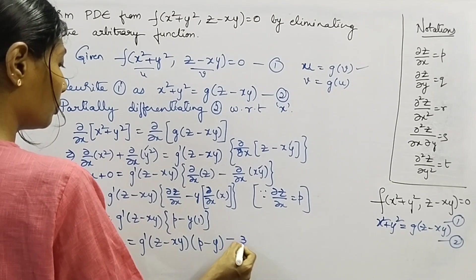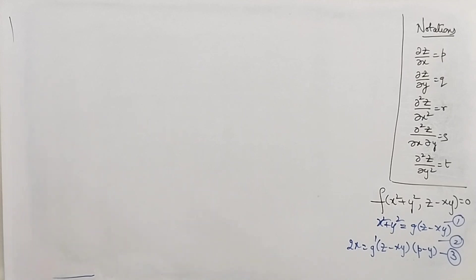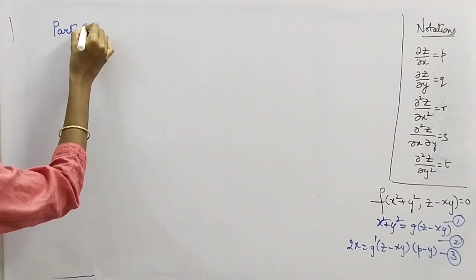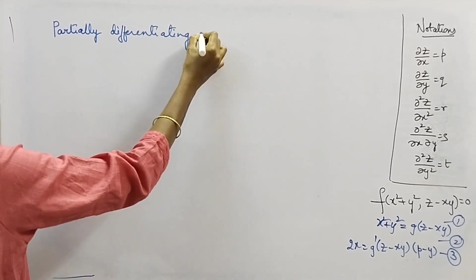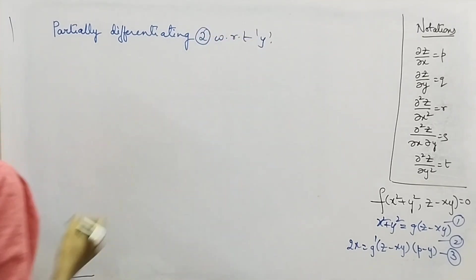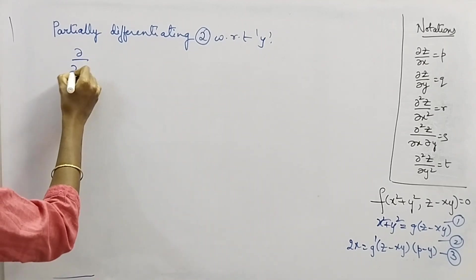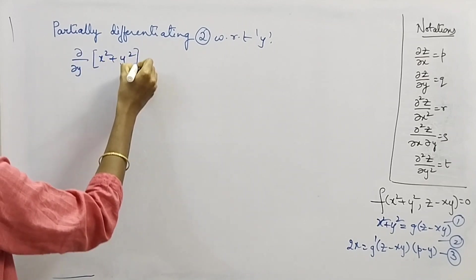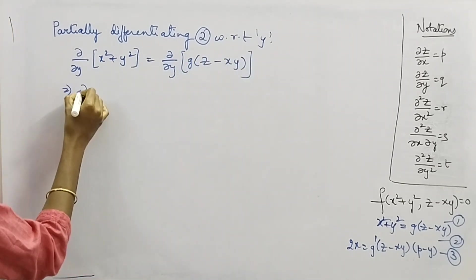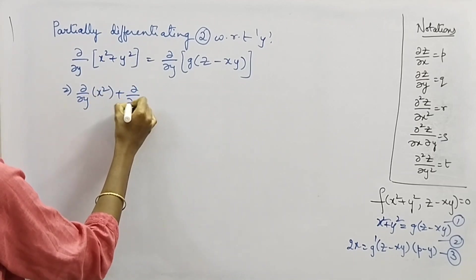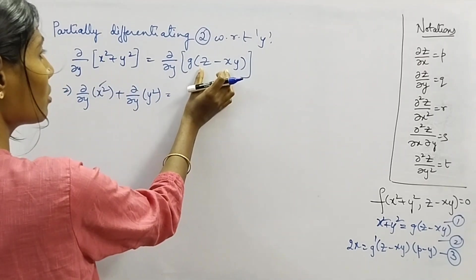Now let's partially differentiate equation 2 with respect to y. Since we are differentiating with respect to y, we treat x as constant. Applying ∂/∂y on both sides of equation 2: x² is constant so its derivative is 0, and the right side gives g'(z − xy) times the inner derivative.